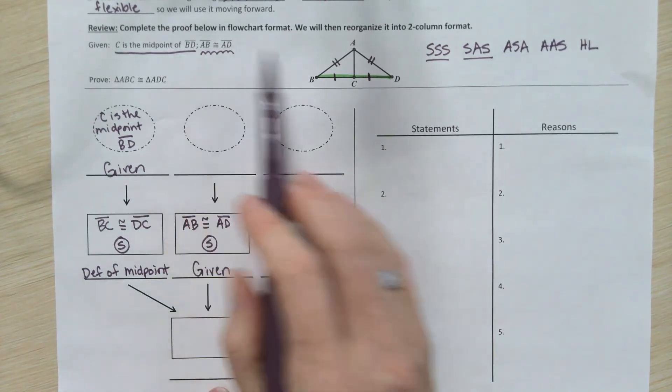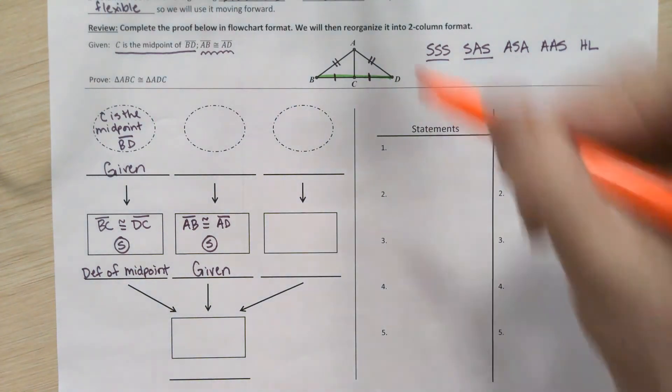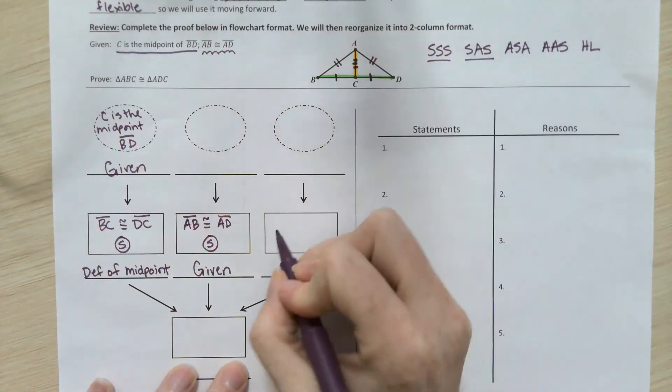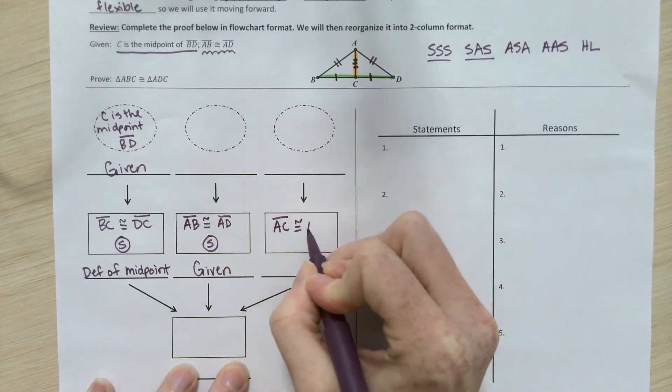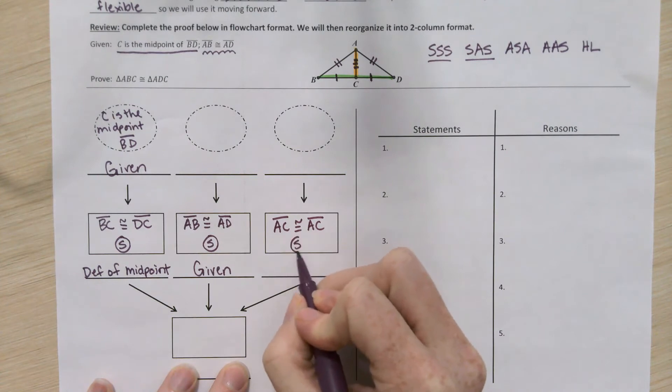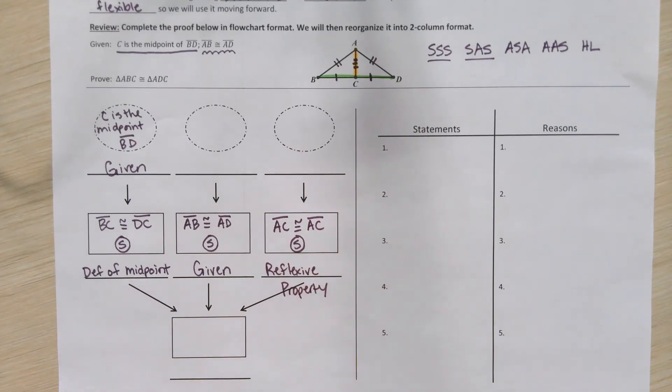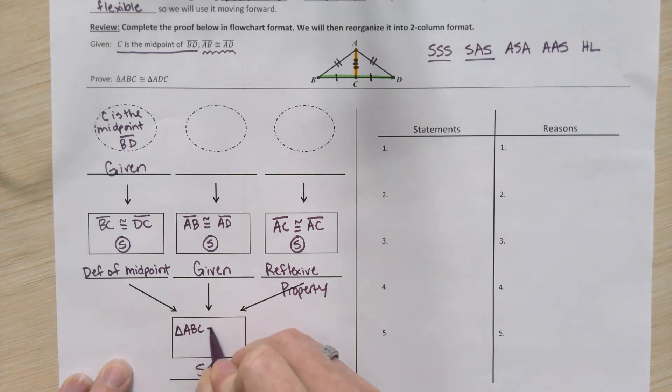When you don't have any givens available, you come back to the picture. Hopefully, you noticed that there's a shared side here. Segment AC is used in both triangles. So, we can mark that segment AC is congruent to itself. Segment AC is congruent to segment AC. That's a third pair of sides not given to us, but something that we noticed by looking at the picture. When we say that shared side is congruent to itself, it is the reflexive property. Now that I see my three S's lined up, I know I'm ready to make my conclusion that triangle ABC is congruent to triangle ADC by side-side-side.